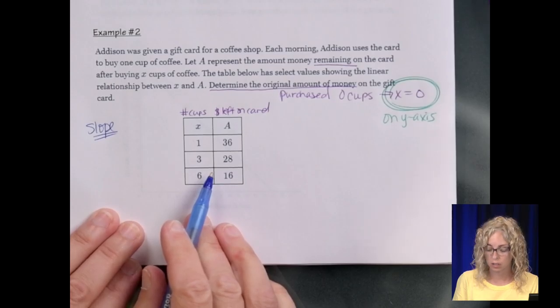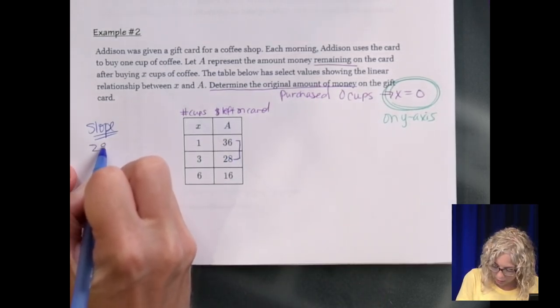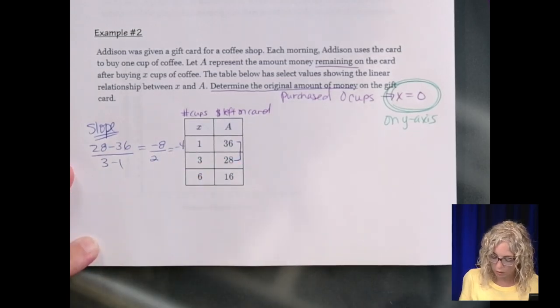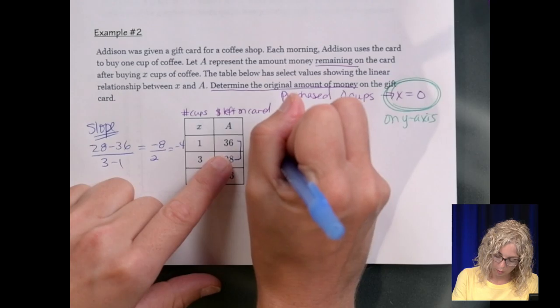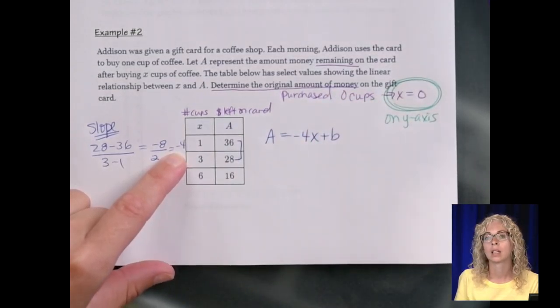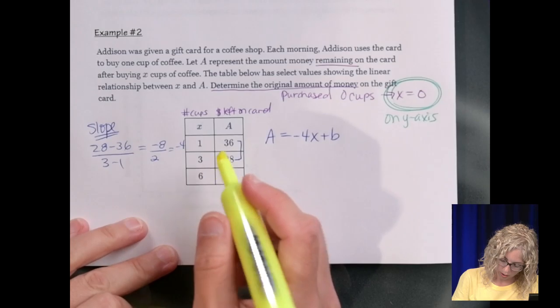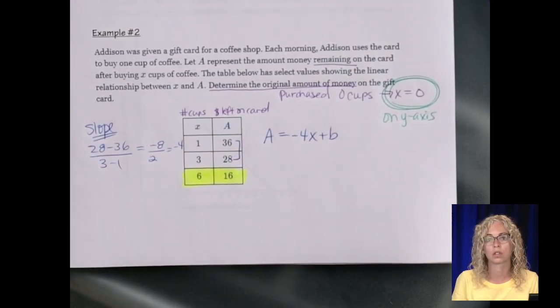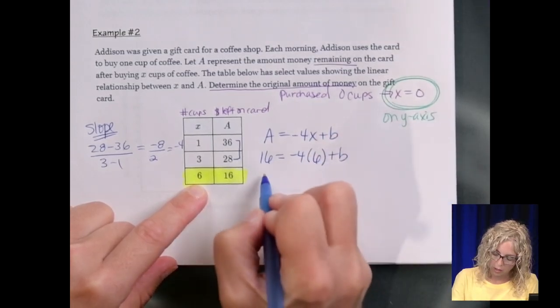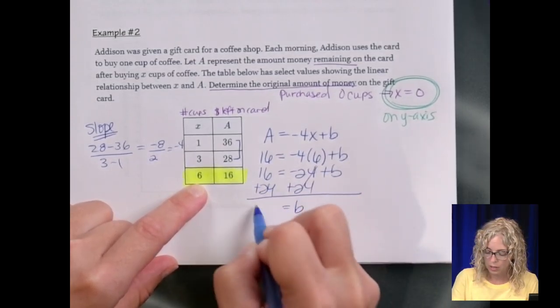So let's first start by finding the slope, and then we'll look at the equation for this table. I'm going to use these two points. So 28 minus 36 over 3 minus 1. So negative 8 over 2 is negative 4. So the equation, the money left on the card, is mx plus b. So negative 4 times x plus b. Now I want to find the b. The y-intercept is the b. So I'm going to use a point on my table. Let's use 6, 16, since I used the other two for the slope. So plug in 16 for a. Negative 4 times 6 for x plus b. So 16 equals negative 24 plus b. To solve for b, we add 24, and our b is 40.